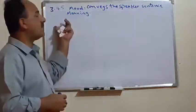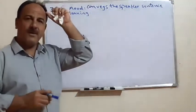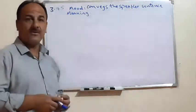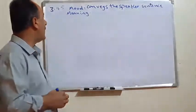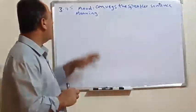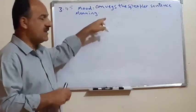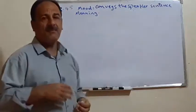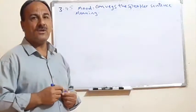Hello, my students. Today we are going to talk about 3.45, the mood. If you remember, we took the mood one day when we were talking about the finite and the non-finite verbs. We said for the verb to be finite, there should be some features like concord and meaning. What is meant by meaning? Meaning, in brief, conveys the speaker's sentence meaning — what is meant by the utterance of the speaker. Here, mood can be classified into two categories.